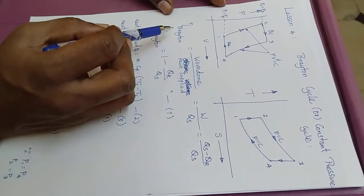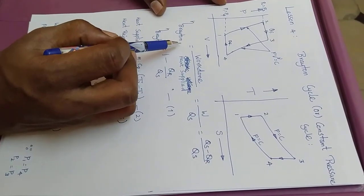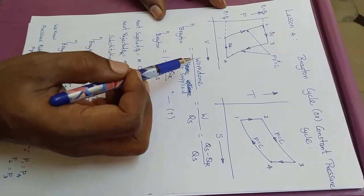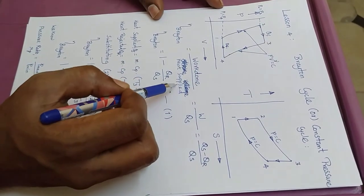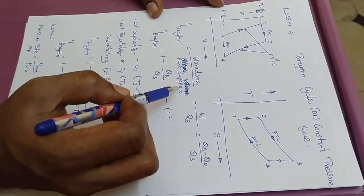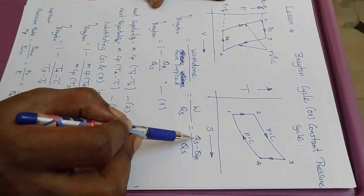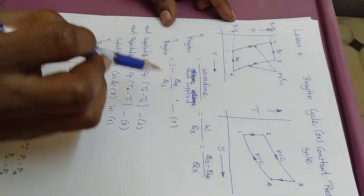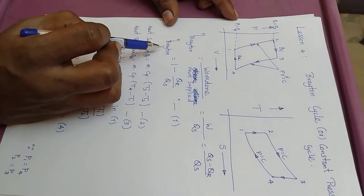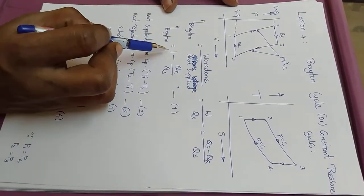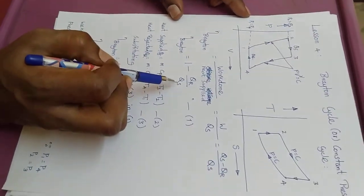Now let us see how to find the efficiency of the Brayton cycle. This is, as usual, the ratio between work done and heat supplied. Work done is heat supplied minus heat rejected, so finally we get the efficiency of Brayton cycle is equal to 1 minus QR by QS.